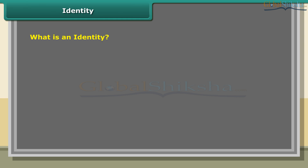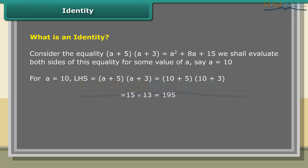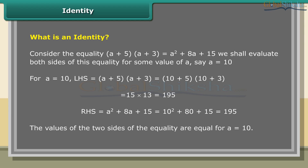What is an identity? Consider the equality (a + 5)(a + 3) = a² + 8a + 15. We evaluate both sides for a value of a, say a = 10. LHS: (10 + 5)(10 + 3) = 15 × 13 = 195. RHS: 10² + 8(10) + 15 = 100 + 80 + 15 = 195. The values of both sides are equal for a = 10.